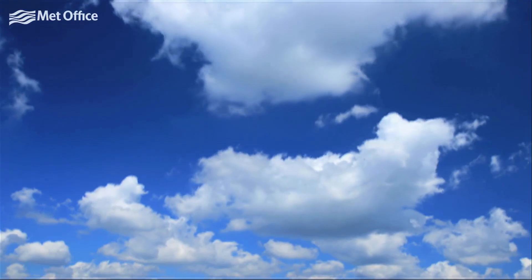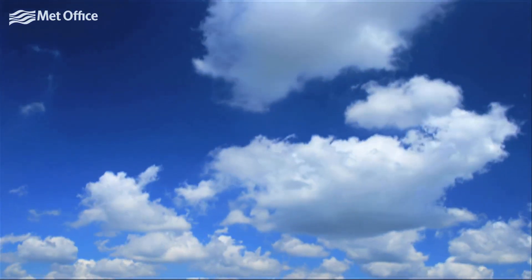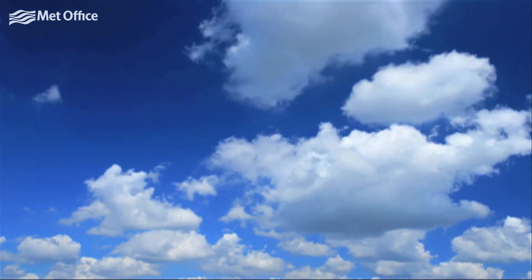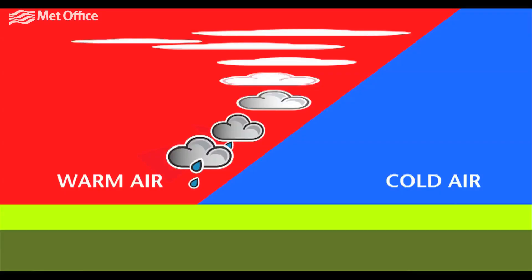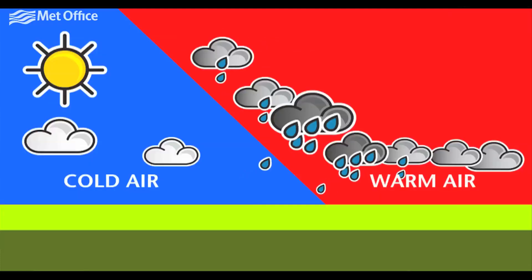The cooling process which first forms clouds can happen in many different ways. Air may be forced to rise along a warm front, and as it cools, deep layers of clouds can develop, sometimes reaching many thousands of metres all the way down to ground level. Air may also be forced to rise as a cold front approaches.